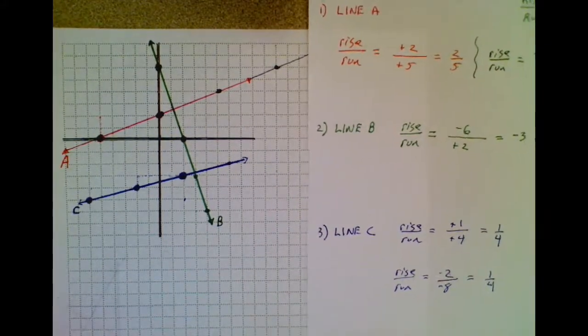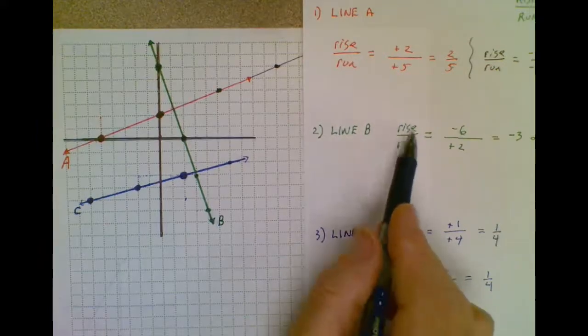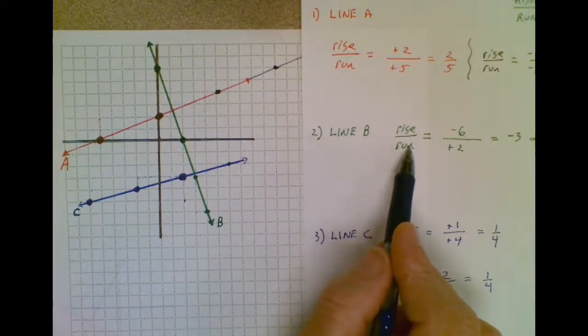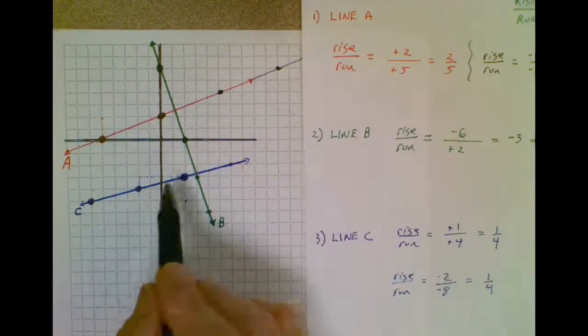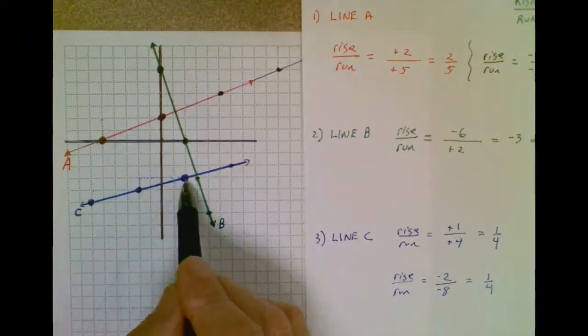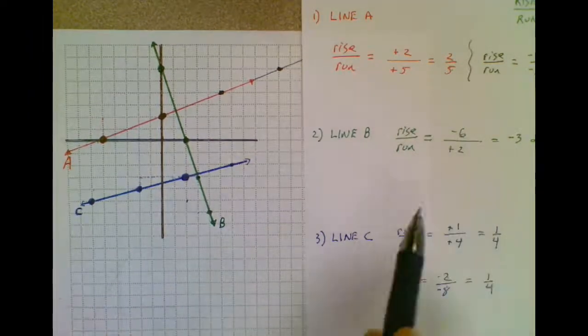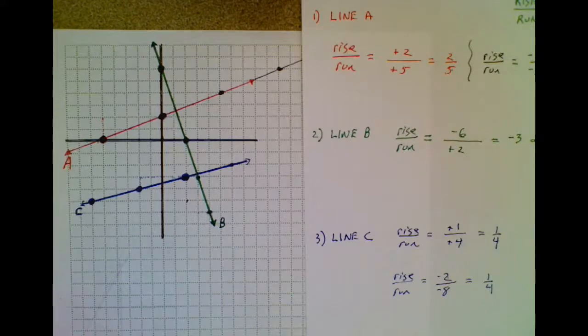The key, I believe, is to write rise over run to start your process. Then choose two points and say I'm going to travel from one point to the other point, and just fill in your rise and your run on that trip. That's it, folks.